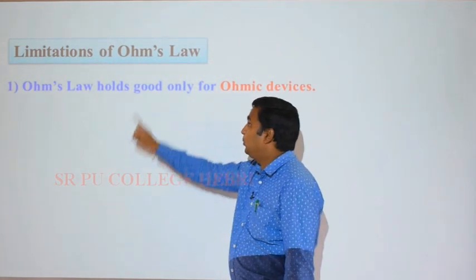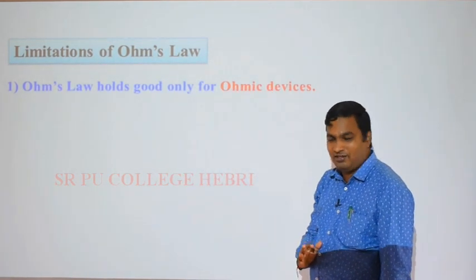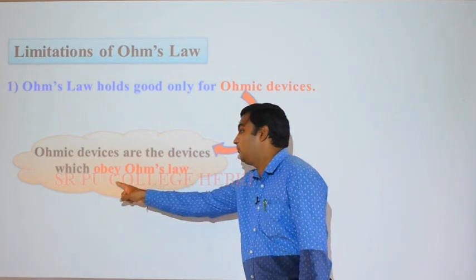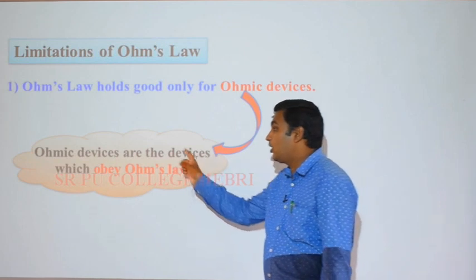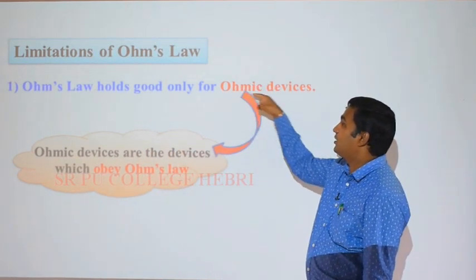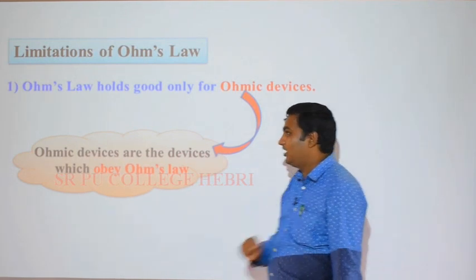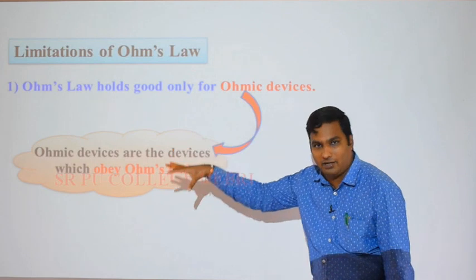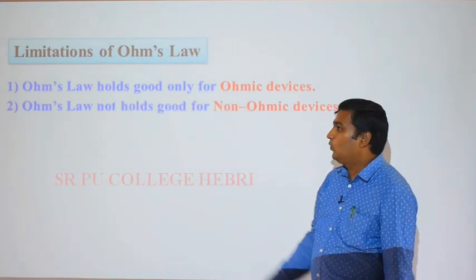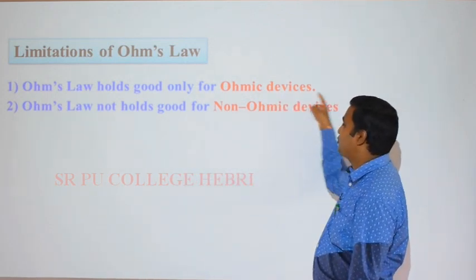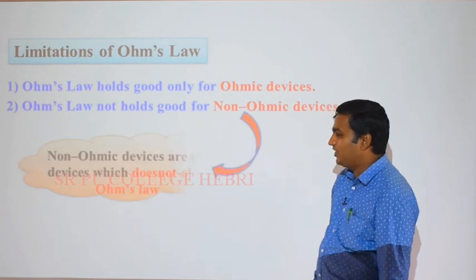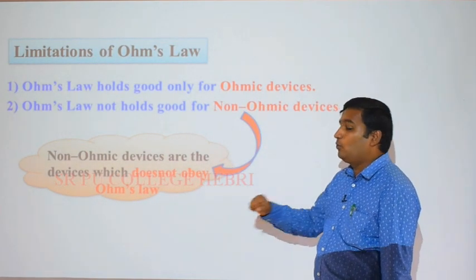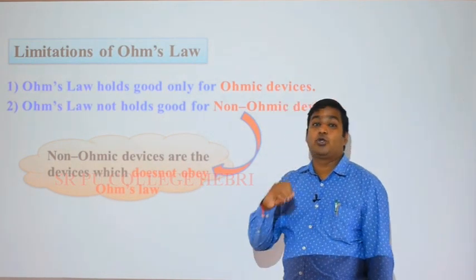The first limitation: Ohm's law holds good only for Ohmic devices — devices which obey Ohm's law. The second limitation: Ohm's law does not hold good for non-Ohmic devices, which are devices that do not obey Ohm's law. A best example of a non-Ohmic device is a diode — a P-type and N-type semiconductor joined together — which does not obey Ohm's law.